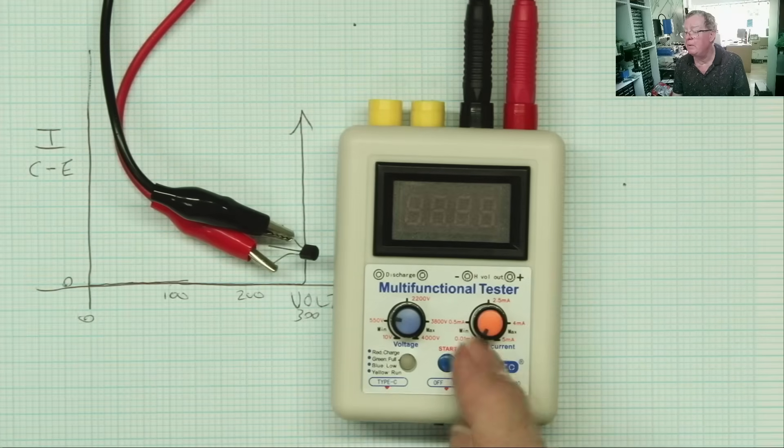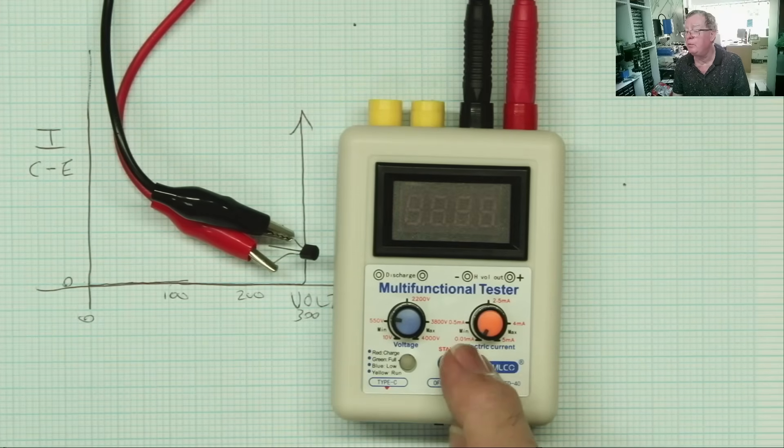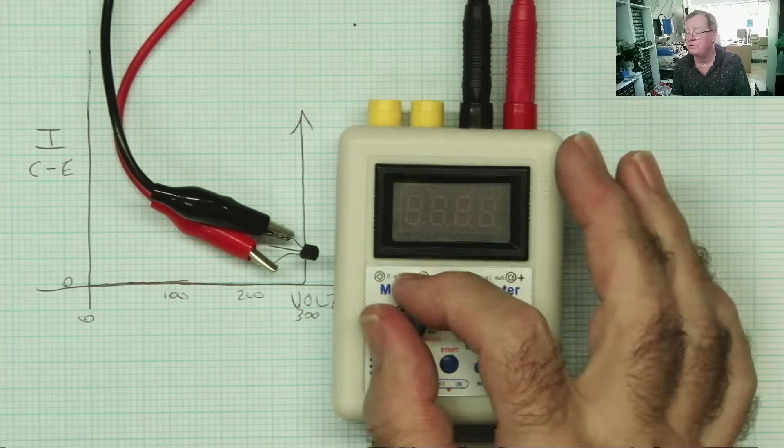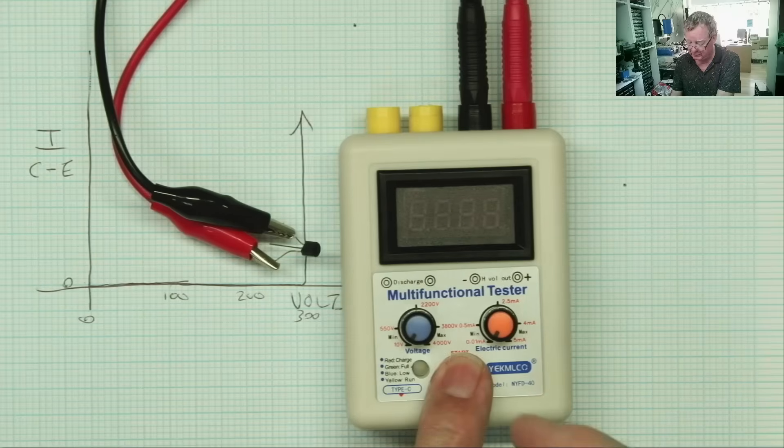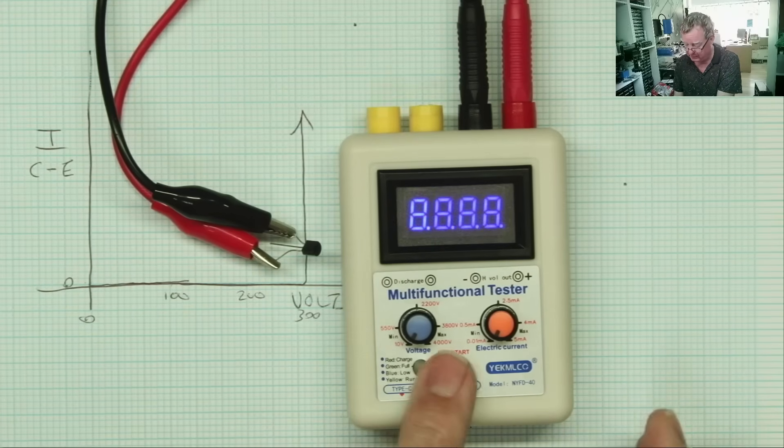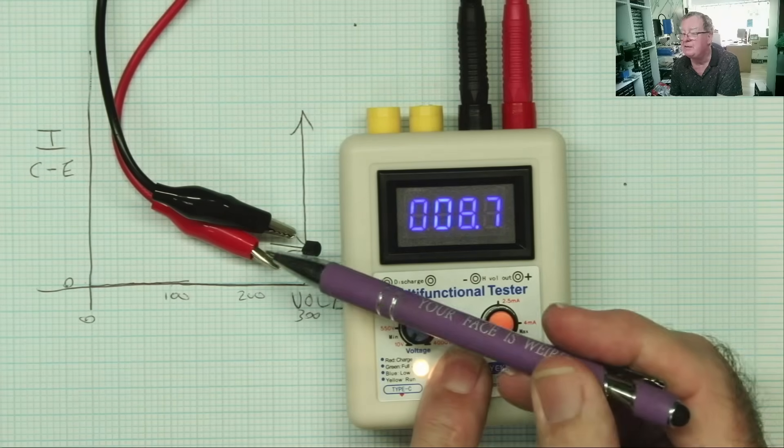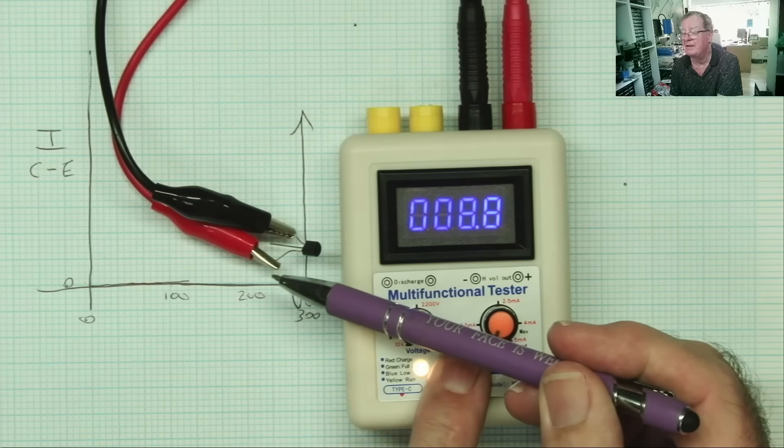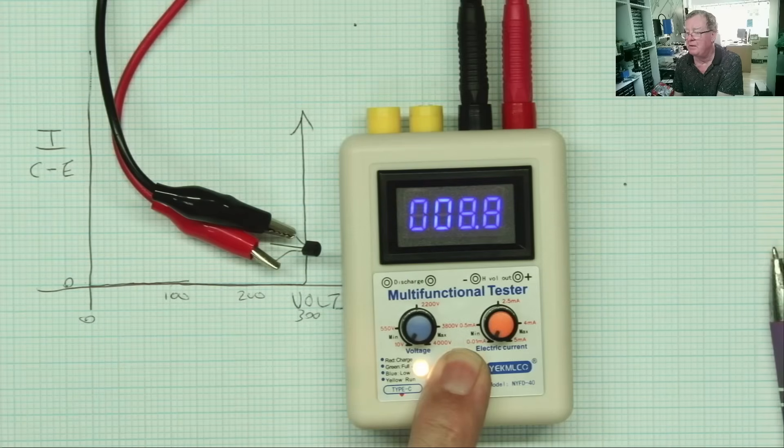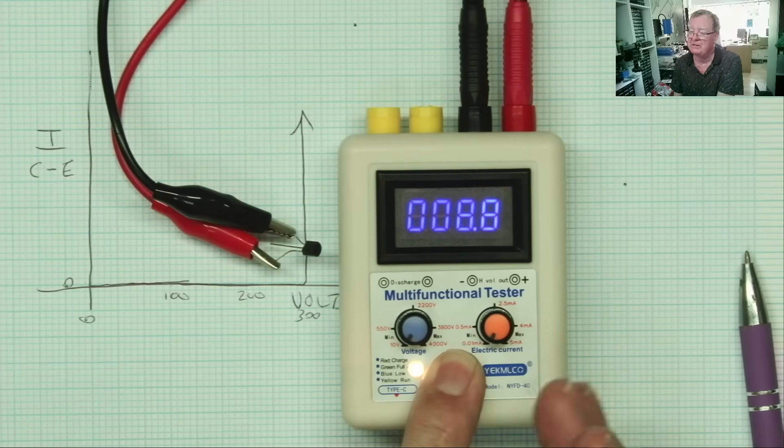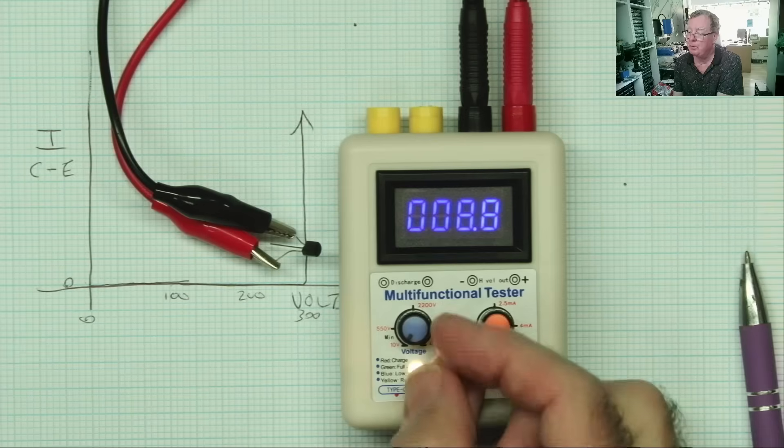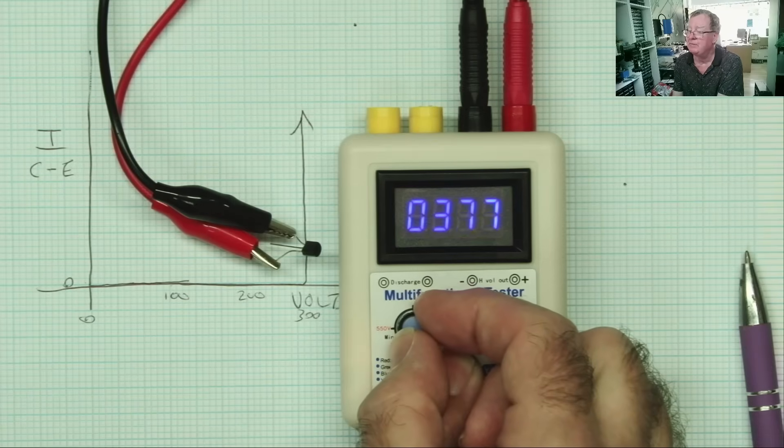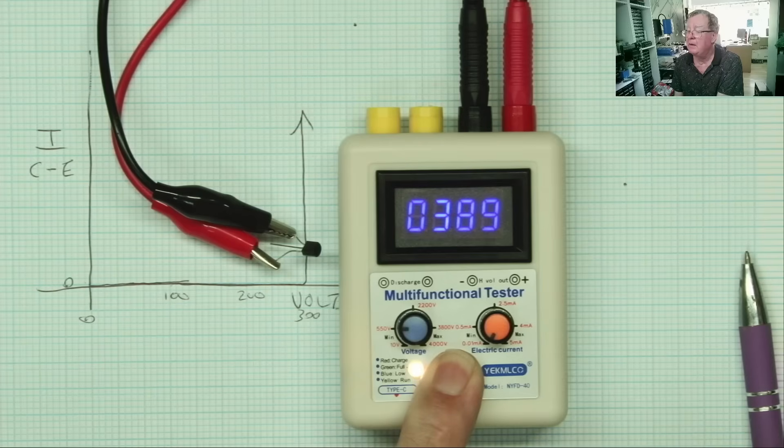So we'll start with the current at 0.01 milliamps, that's the lowest. I'll start with the voltage at the lowest as well. I'll switch it on, hit test, and we can see we have 8.7 volts between the collector, which is the red, and the emitter, which is black. This is an NPN transistor, so the collector is positive with respect to the emitter. And I can turn the voltage up here.